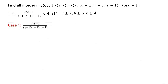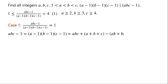Case 1: (abc - 1) / [(a-1)(b-1)(c-1)] = 1. Then abc - 1 = (a-1)(b-1)(c-1). By expanding, the right side equals abc + a + b + c - ab + bc + ca - 1.